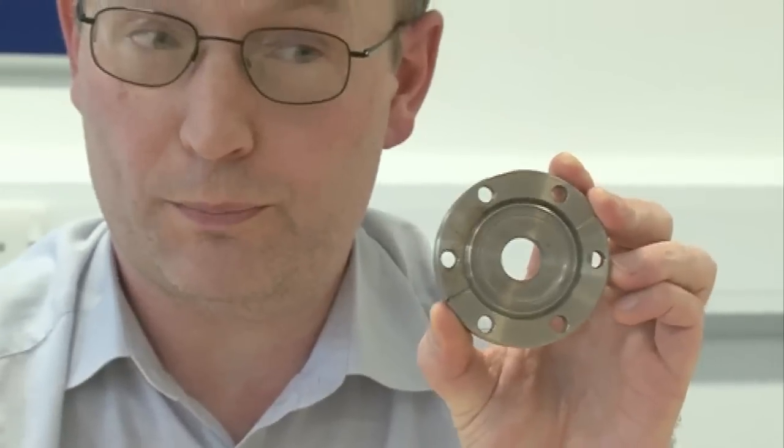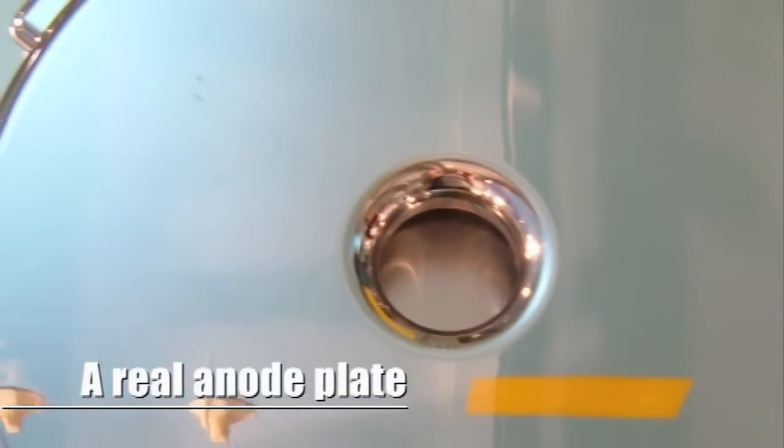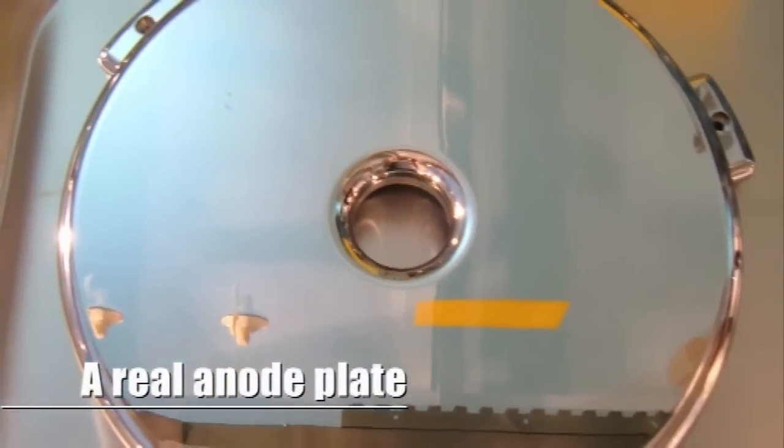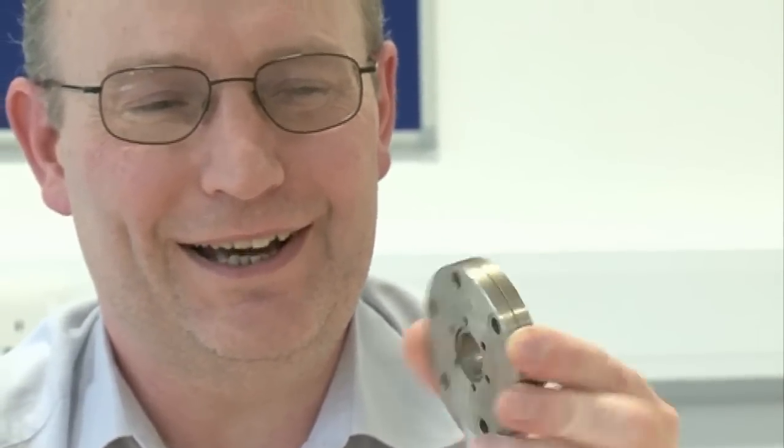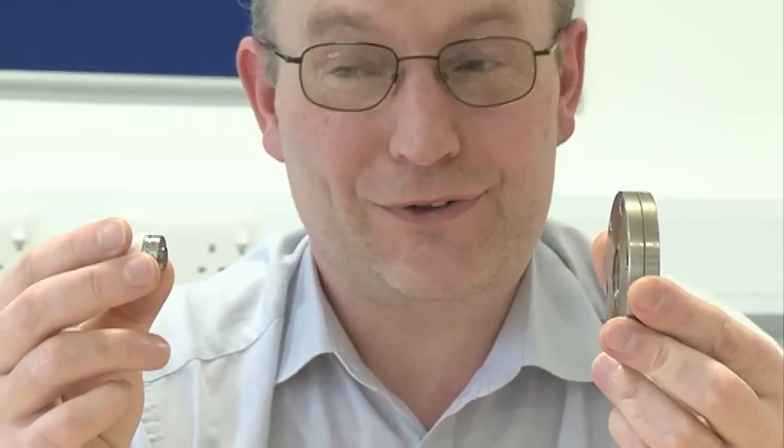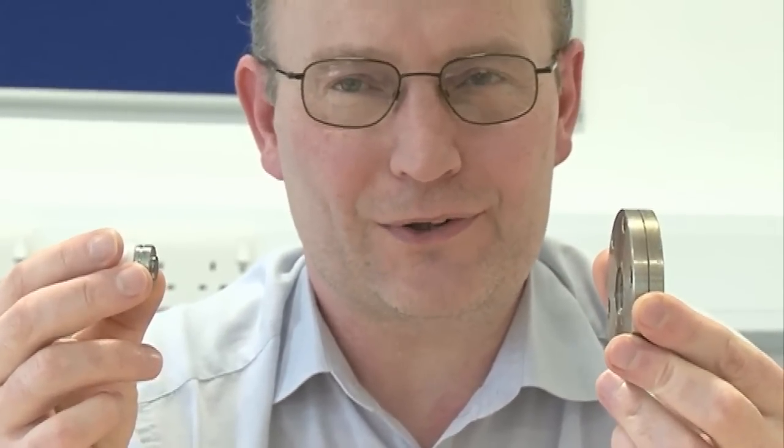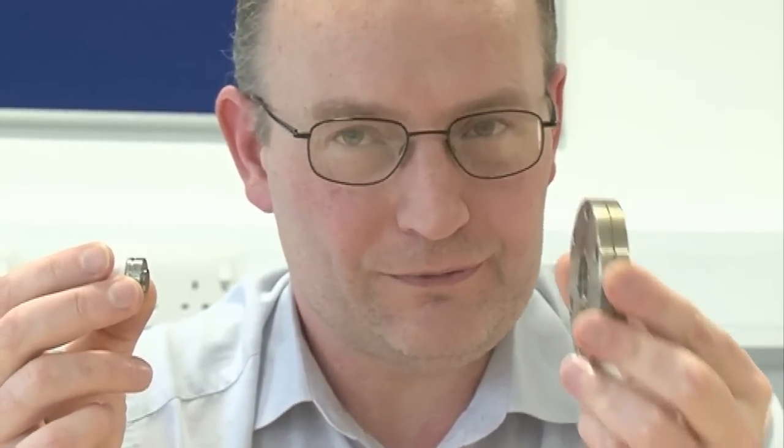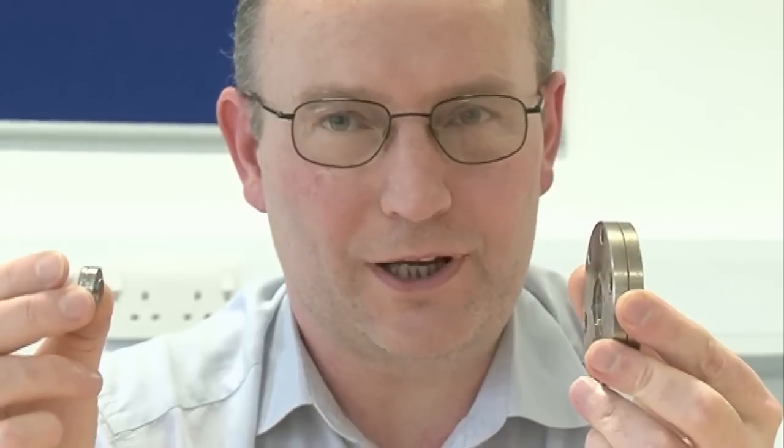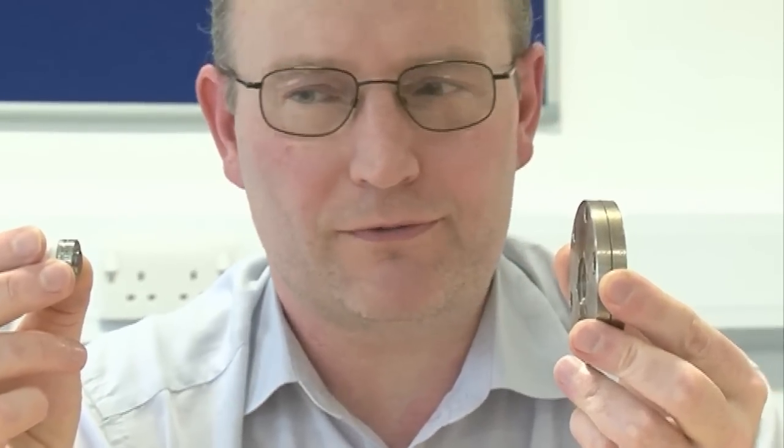Just in front of the cathode we have an anode assembly or an anode plate which is essentially a piece of steel with a hole in the middle. This would normally be highly polished to support high voltage. This is not a real one though, this is a vacuum fitting which I found in the vacuum lab. This would be situated just a few centimeters in front of the cathode assembly, but held at zero volts. So this is at Earth, zero volts. This one is at 250,000, 350,000 volts.